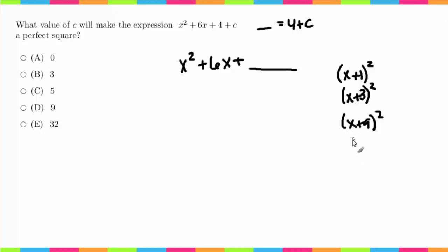What is not a perfect square is something like (x + 1)(x + 5). That is not a perfect square because you have two different terms.